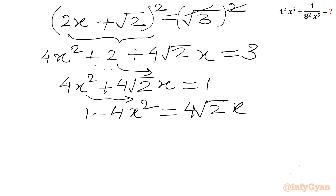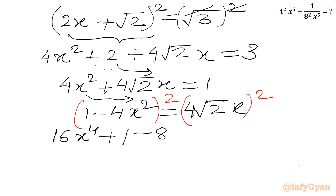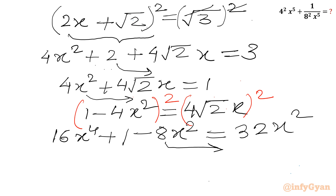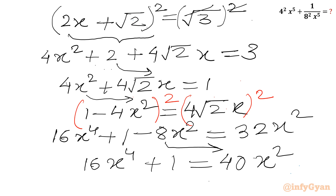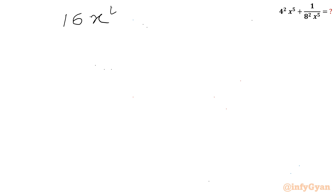Again I will consider squaring both sides. So applying (a − b)² on the LHS, this will give us 16x⁴ + 1 minus 8x². And the RHS will be 4² is 16 and (√2)² is 2, so 16 times 2 is 32x². Now taking the −8x² term to the RHS: 16x⁴ + 1 equal to 40x².